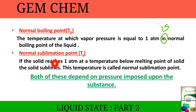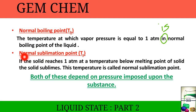In some cases, if a solid reaches 1 atm at a temperature below the melting point — that is, it has achieved a pressure of 1 atm but still has not melted — the solid sublimes, converting directly from solid to gas. That temperature is known as the normal sublimation point. Both normal boiling point and normal sublimation point depend on the pressure imposed upon the substance.